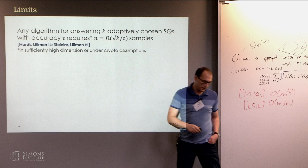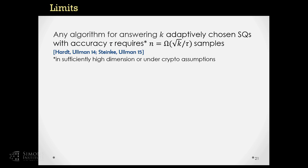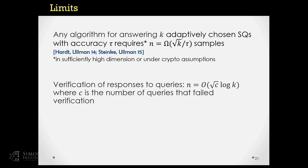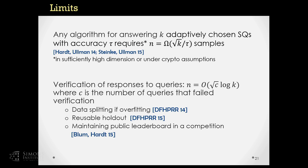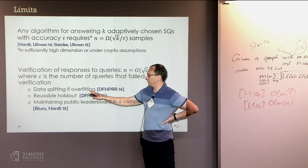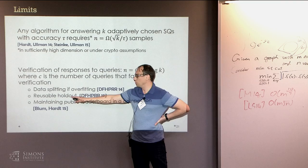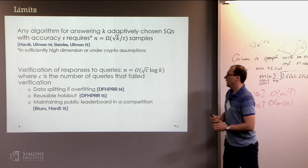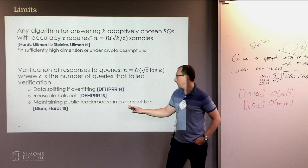One way around these limitations is to look at the somewhat simpler problem of verifying the responses to queries. Using algorithms from differential privacy, one can show that given a number of samples scaling as log(K) * sqrt(c), one can verify K queries as long as at most c of them fail the verification step. Using this, one can build nice applications: do data splitting only if overfitting happened, get a reusable holdout with provable guarantees, and maintain a public leaderboard in a competition with provable guarantees — as shown by Blum and Hardt.